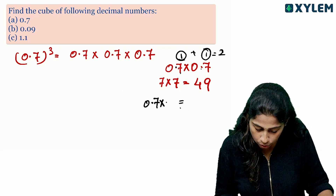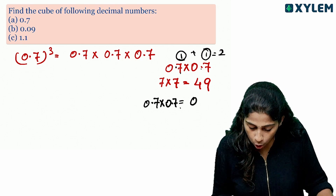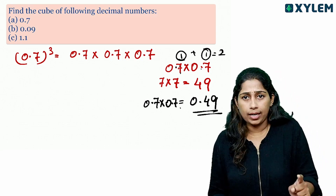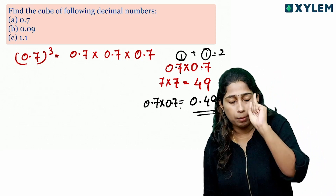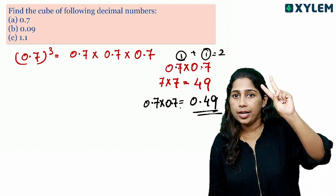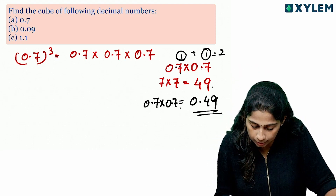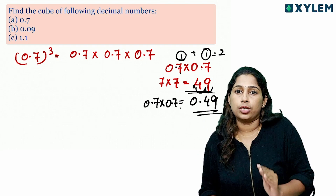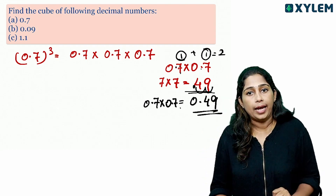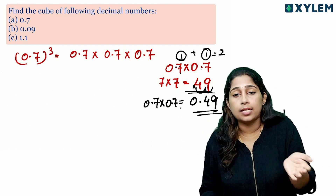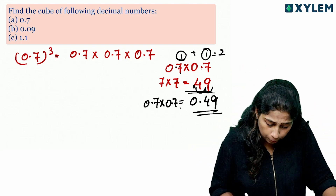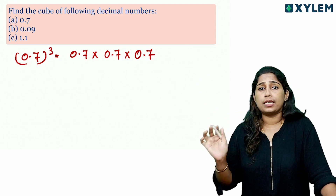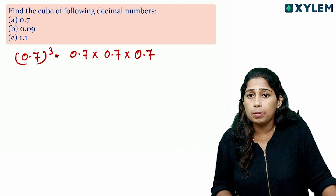For example, 0.7 into 0.7 is equal to 0.49. The decimal point in 0.7 is 1 digit, and in the other 0.7 is also 1 digit — total is 2 decimal digits. So the result has the decimal point placed 2 digits in, giving 0.49. We do the same concept for the cube.